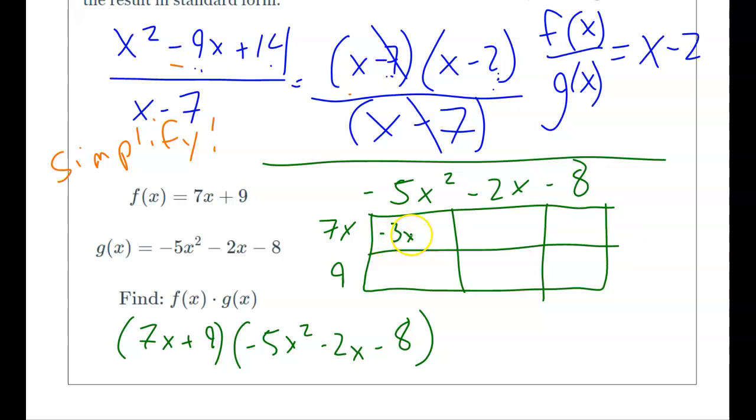So here we get -35x³. So be careful with your signs and your exponents here. That's where I see people mess up. 7x times -2x would be -14x². And then here we get -56x.